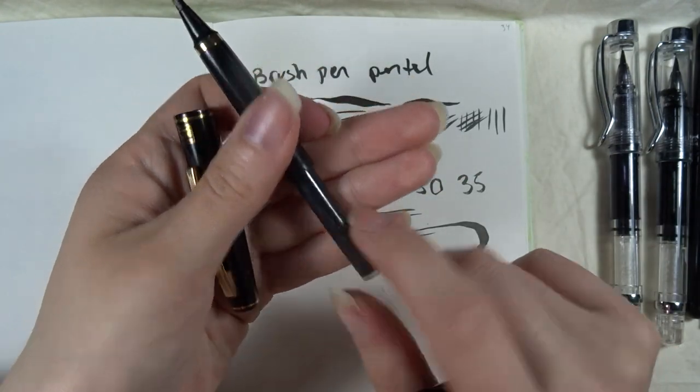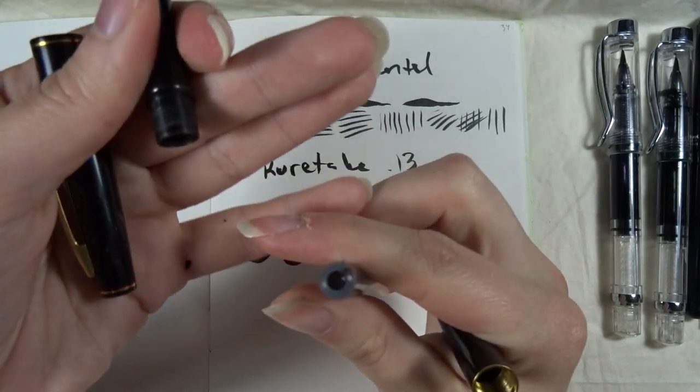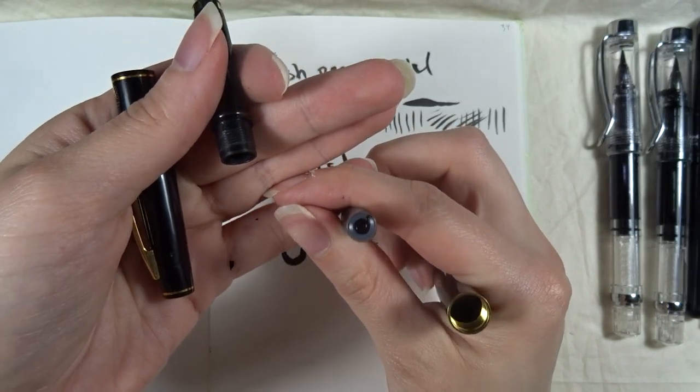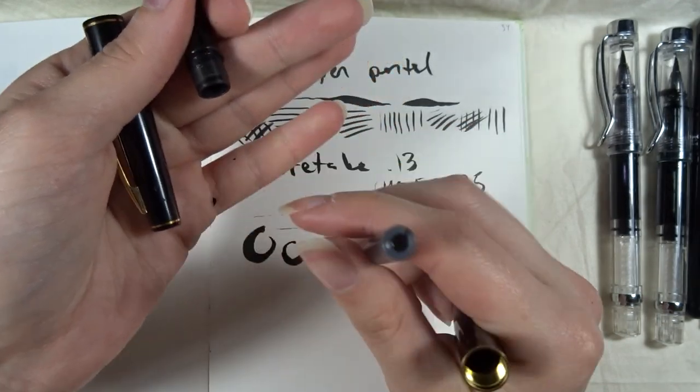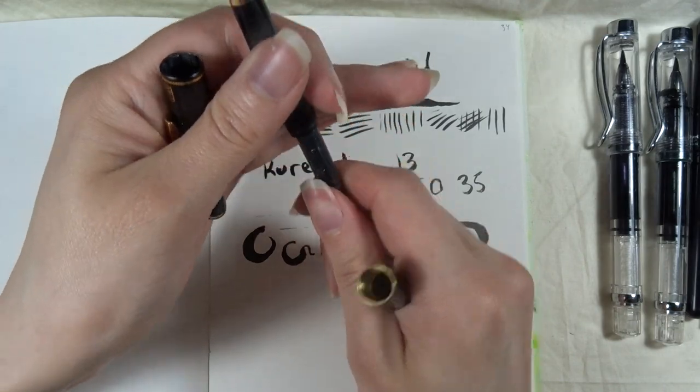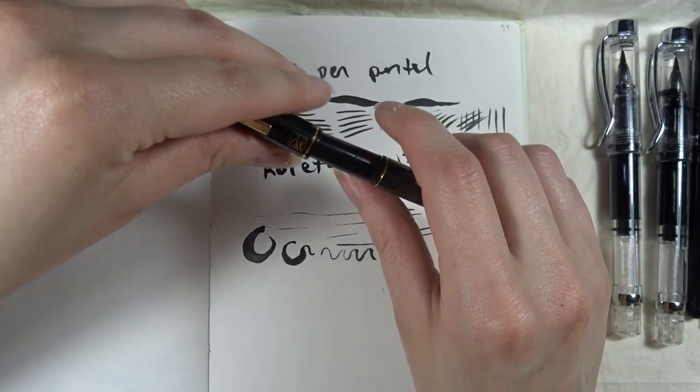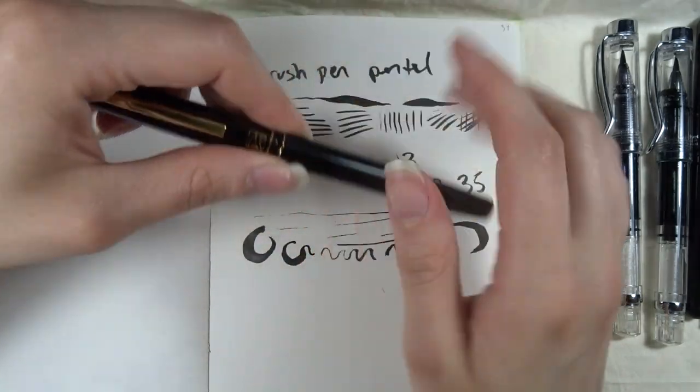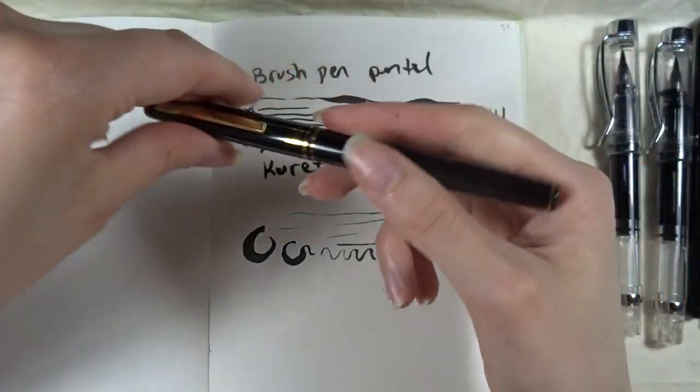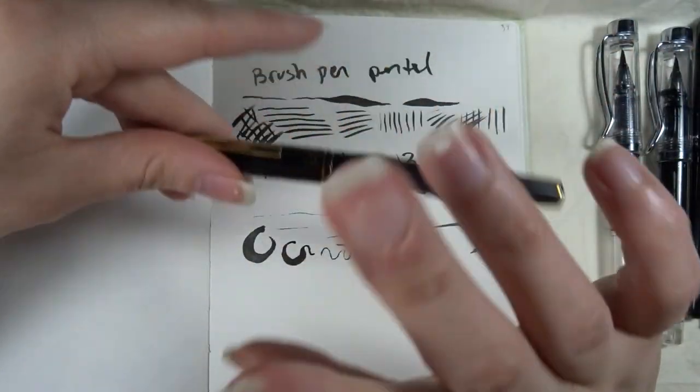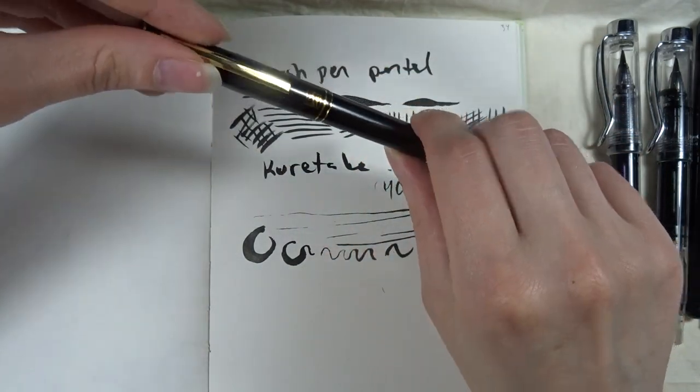These two use cartridges, but the cartridges this uses are actually similar to the platinum cartridges. So you can use platinum cartridges or Kuretake ones. You can buy the platinum converter and it will fit here just fine. You can then fill this pen using the converter. This I find really convenient. But I have some of these cartridges left so I will use this up. Also, I think my platinum converter is on my platinum pens.